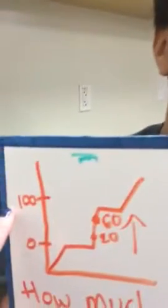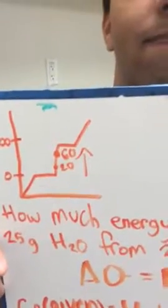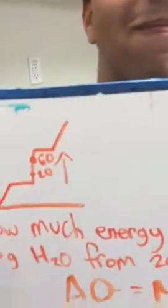So first you draw a graph. The melting point is zero and the boiling point is 100, and you're going from 20 degrees to 60 degrees, which is an endothermic reaction, so the arrow goes up.